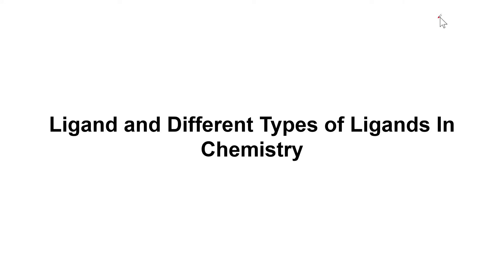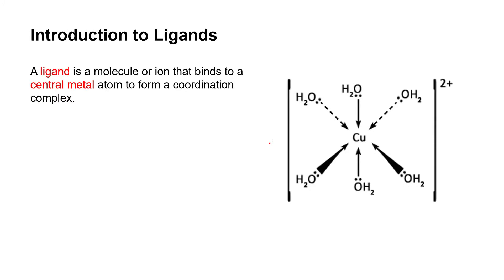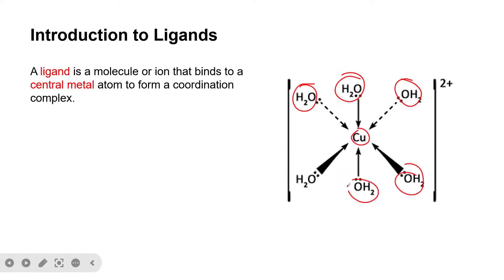Welcome, ladies and gentlemen. In today's video we are going to look at the concept of ligands and the different types of ligand in chemistry. A ligand is a molecule — it can be an ion — that binds to a central metal atom to form a coordination complex. Here we have the central metal atom copper, with six water molecules bound to it; these water molecules are considered ligands.